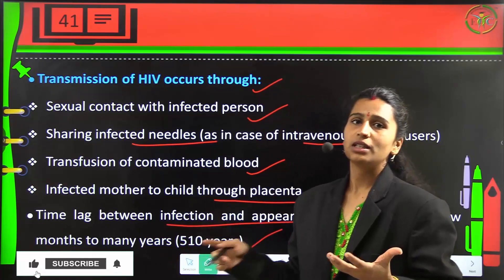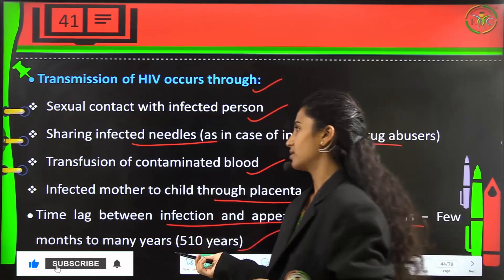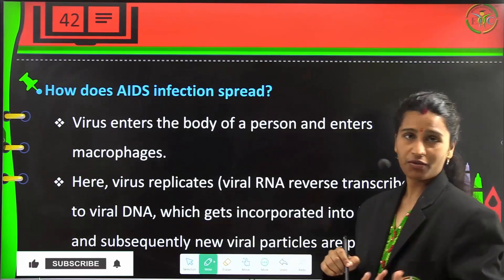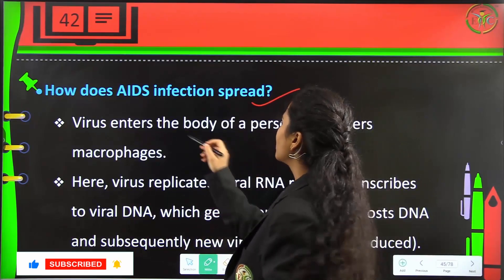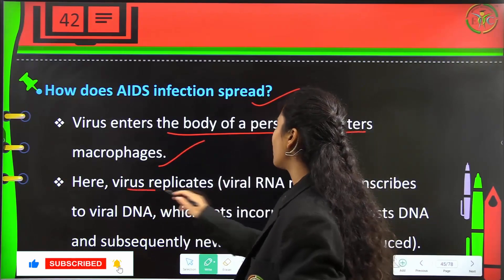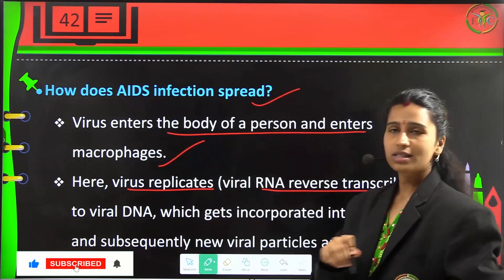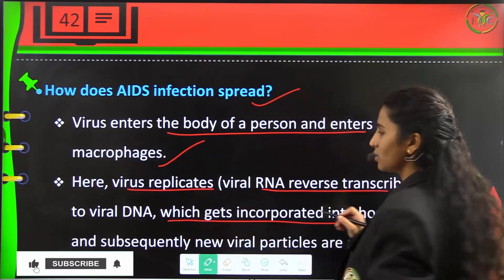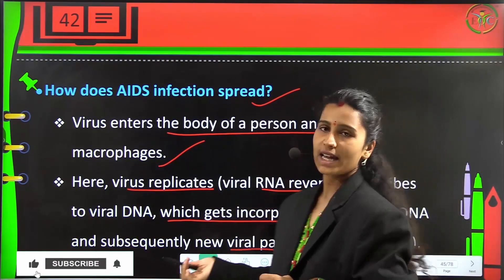Sexual contact with an infected person is the main reason AIDS is spreading so rapidly nowadays. One should never have multiple sex partners or unprotected sex. The virus enters the body and then enters the macrophages, where viral RNA is reverse-transcribed to viral DNA, which gets incorporated into the host DNA and becomes a new viral particle-producing agent.